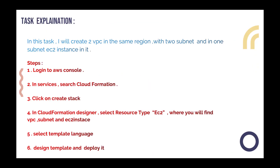In this task we will create two VPCs in the same region. In each VPC we will create two subnets and one EC2 instance. So in total we have to create two VPCs, four subnets, and two EC2 instances.